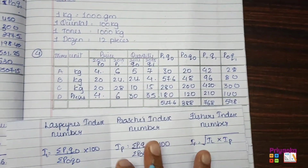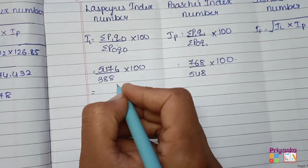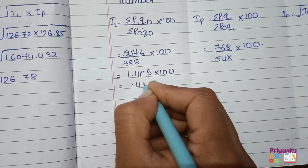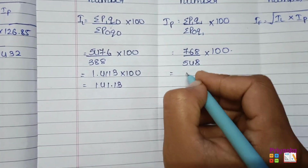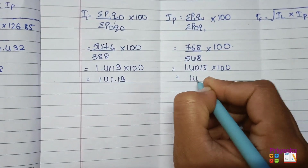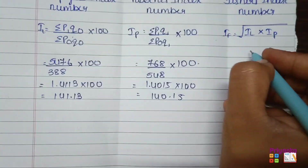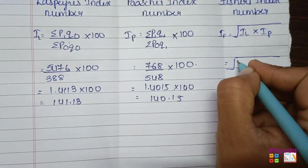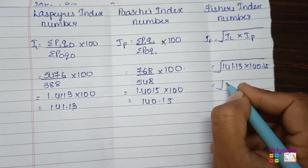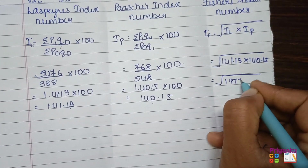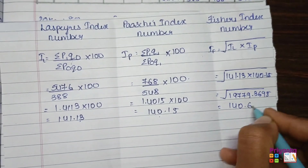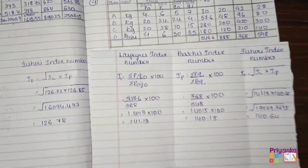Putting values into the Laspeyres formula: 547.6 ÷ 388 × 100 = 141.13 × 100 = 141.13. For Paasche: 768 ÷ 548 × 100 = 1.4015 × 100 = 140.15. For Fisher's: take square root of (141.13 × 140.15) = square root of 19779.37 ≈ 140.64. This completes question number four.